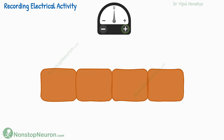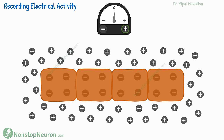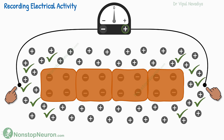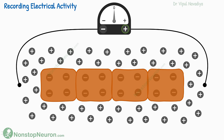Now let's replace the battery with a series of cells. During the resting condition, the inside of the cell is electronegative, and the outside is electropositive. We connect the electrodes at the ends of the series — placed outside the cells, so they detect the potential on the outer side only. As far as recording is concerned, we can ignore the potential inside the cell. In the beginning, both electrodes are at positive potential, so there is no potential difference between the two, and the meter shows no reading.